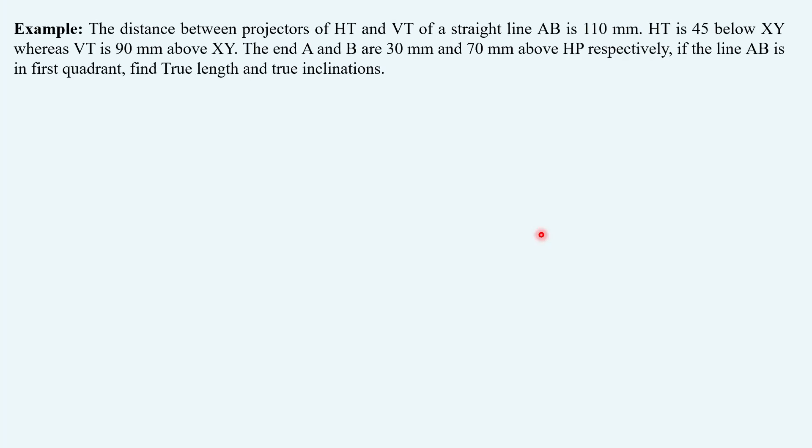Let us take an example for better understanding. The question says the distance between projectors of HT and VT of a straight line AB is 110 mm. HT is 45 mm below XY whereas VT is 90 mm above XY.